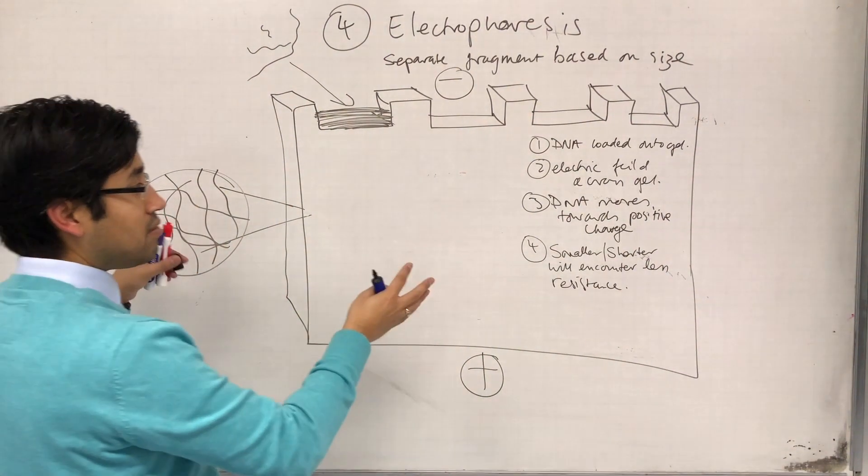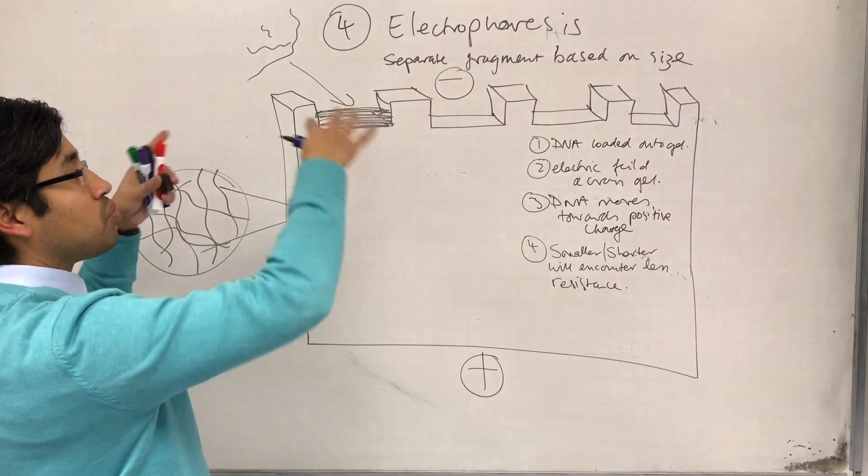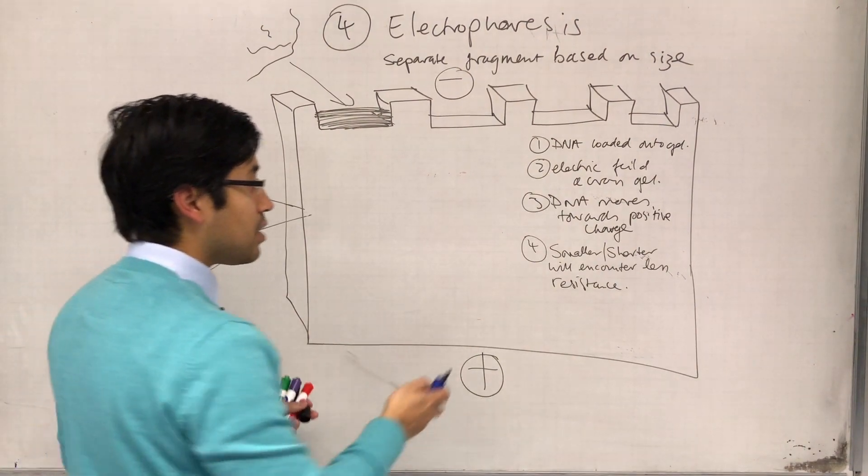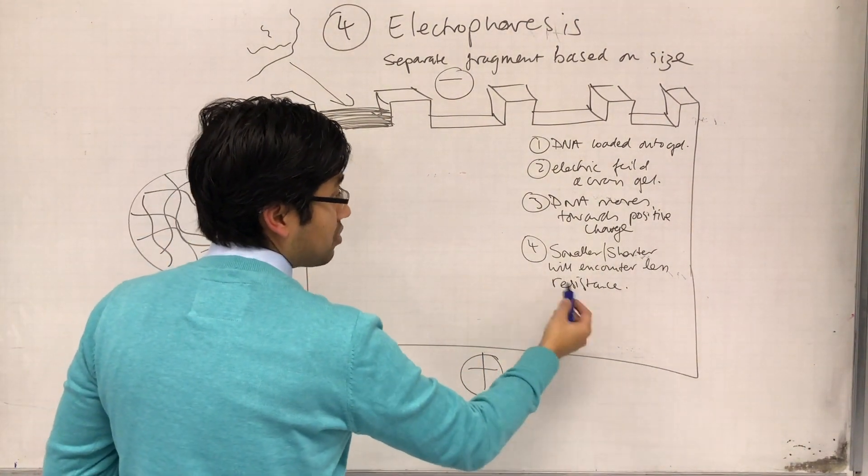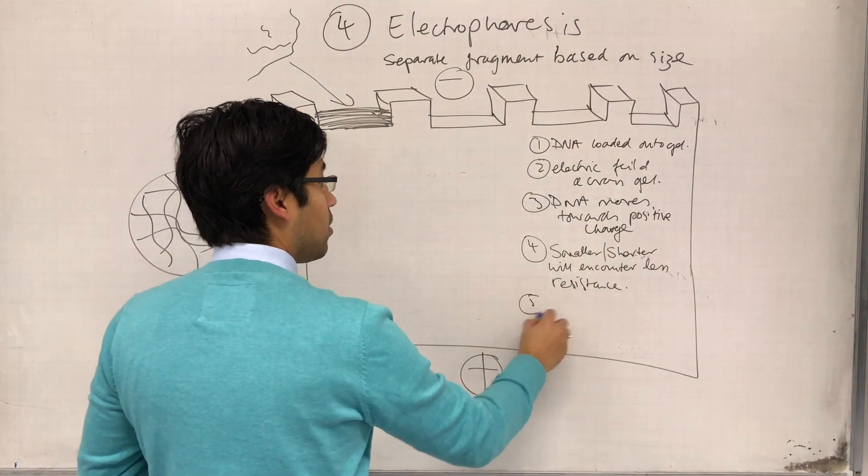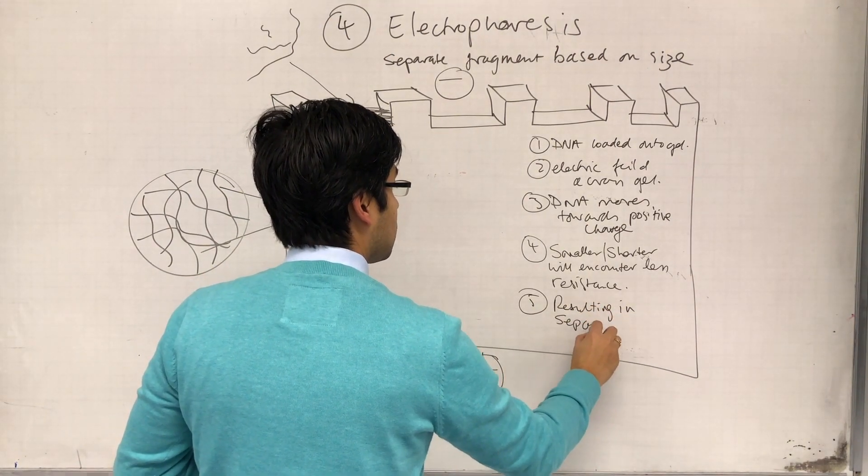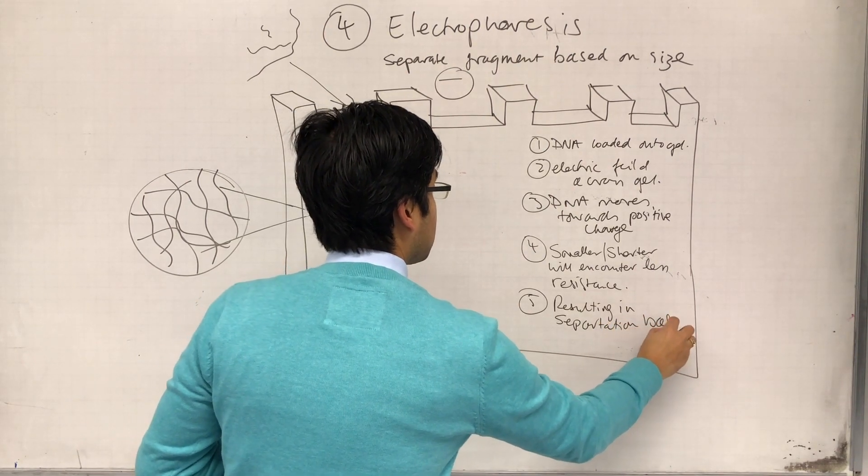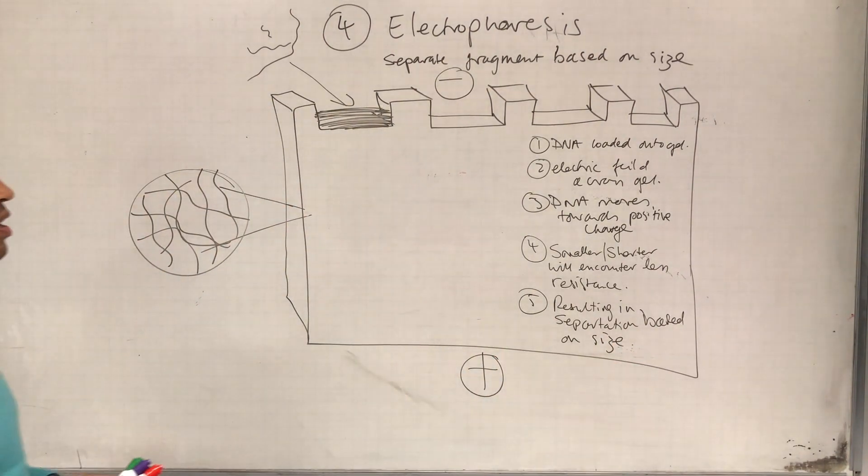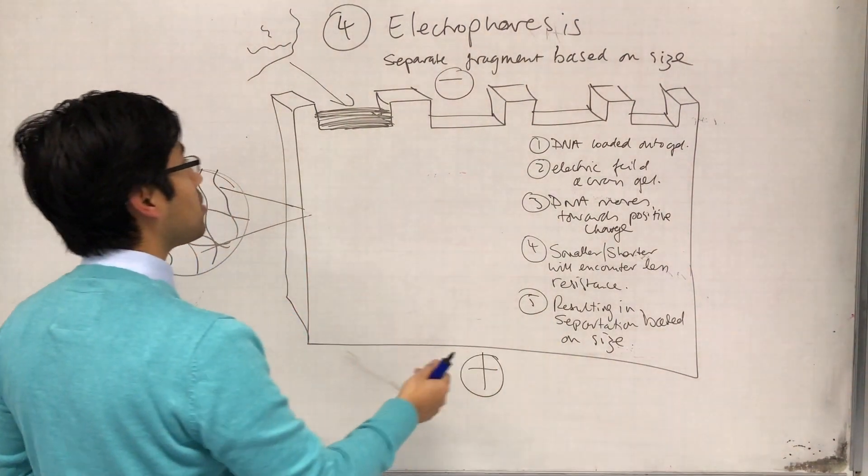So the gel will be less effective at slowing down the movement of the smaller particles, whereas the longer DNA fragments will take longer to move through the gel. And what this does is causing a separation based on size, basically. So smaller, shorter fragments will encounter less resistance in the gel, resulting in separation based on size of DNA fragment. It's not really the amount of charge or anything like that, it's only based on the length of the DNA.